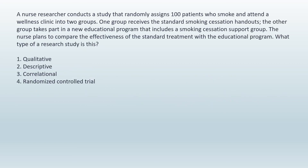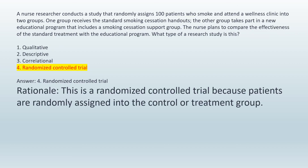A nurse researcher conducts a study that randomly assigns 100 patients who smoke and attend a wellness clinic into two groups. One group receives standard smoking cessation handouts. The other group takes part in a new educational program that includes a smoking cessation support group. The nurse plans to compare the effectiveness of the standard treatment with the educational program. What type of research study is this? 1. Qualitative. 2. Descriptive. 3. Correlational. 4. Randomized controlled trial. Answer: 4. Randomized controlled trial. Rationale: This is a randomized controlled trial because patients are randomly assigned into the control or treatment group.